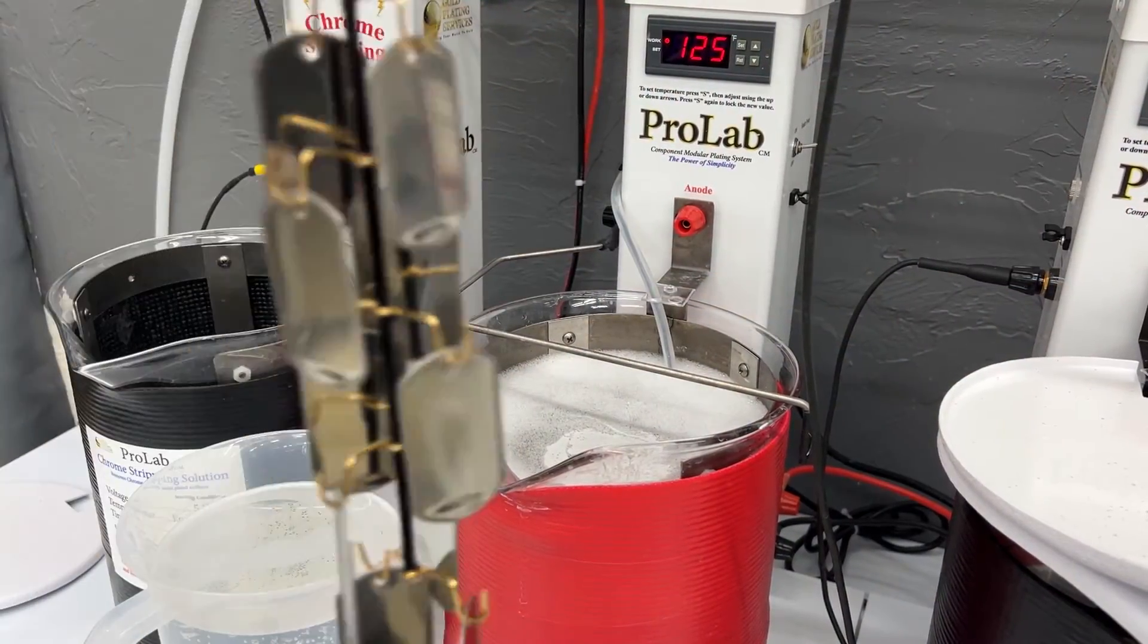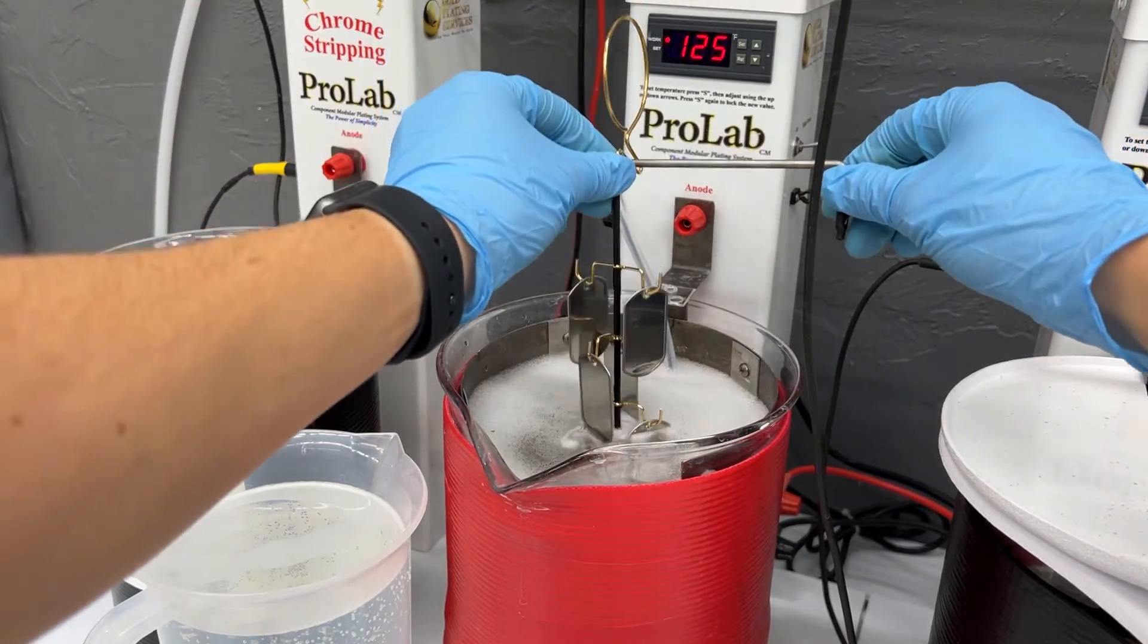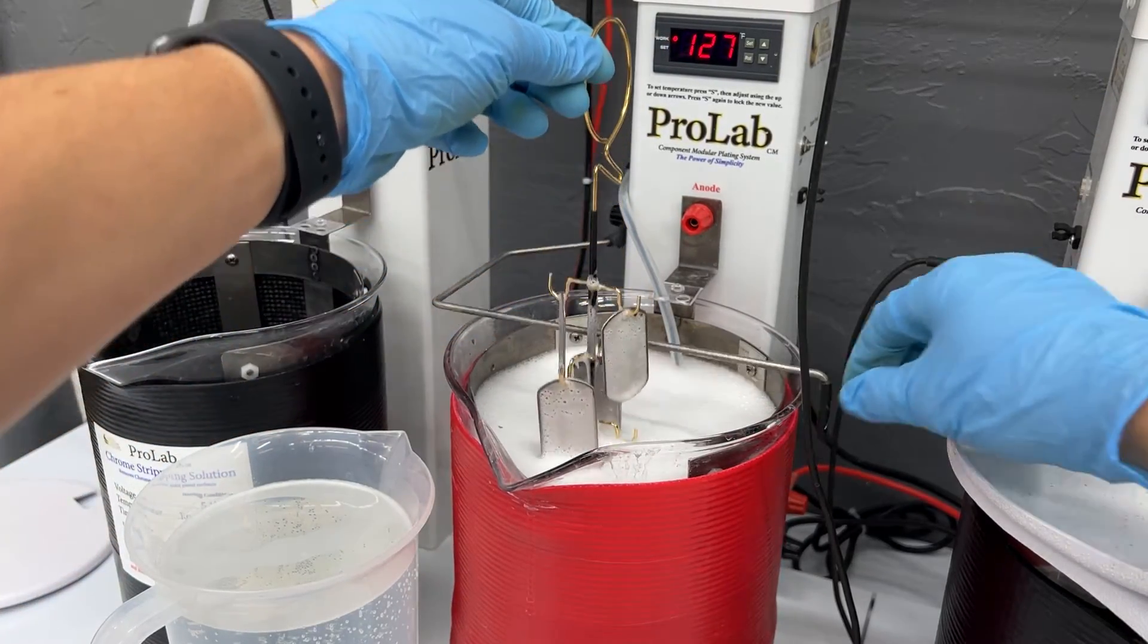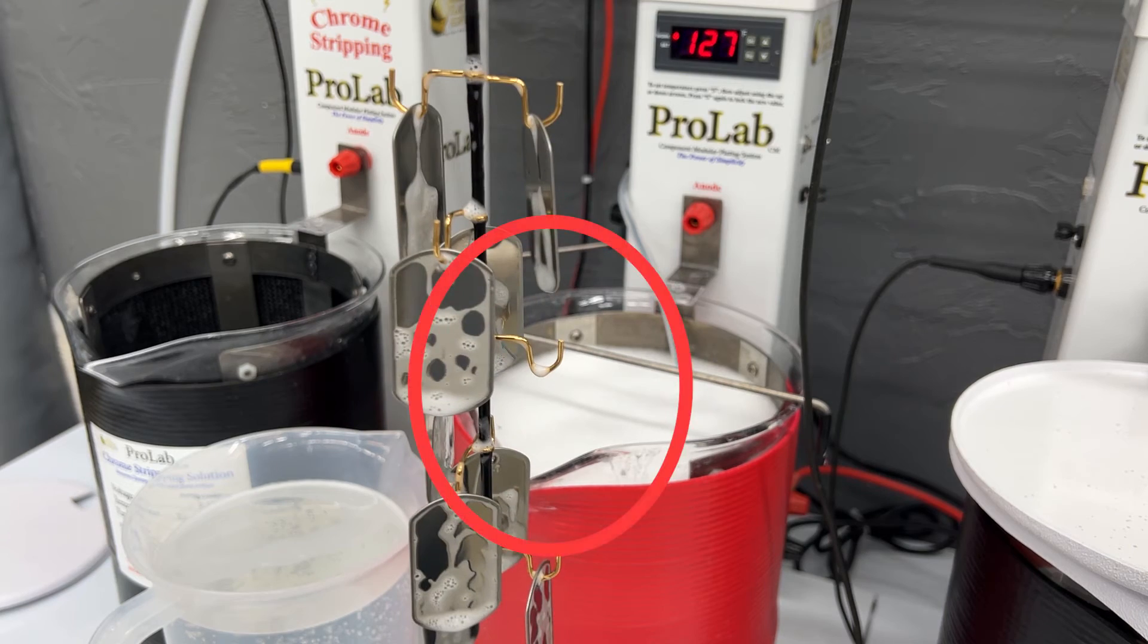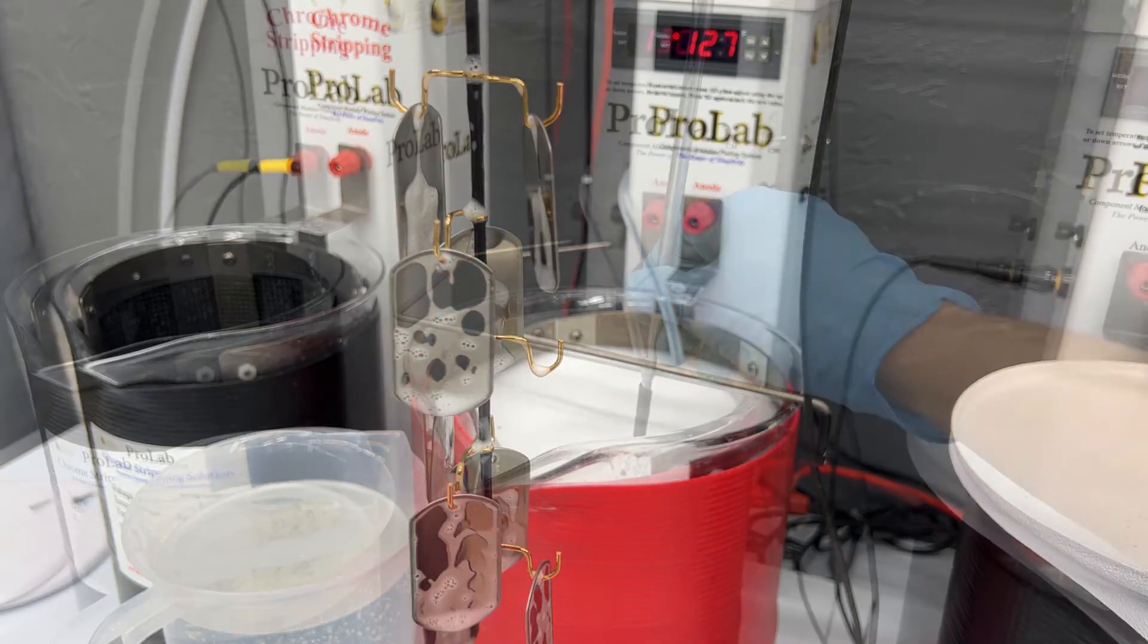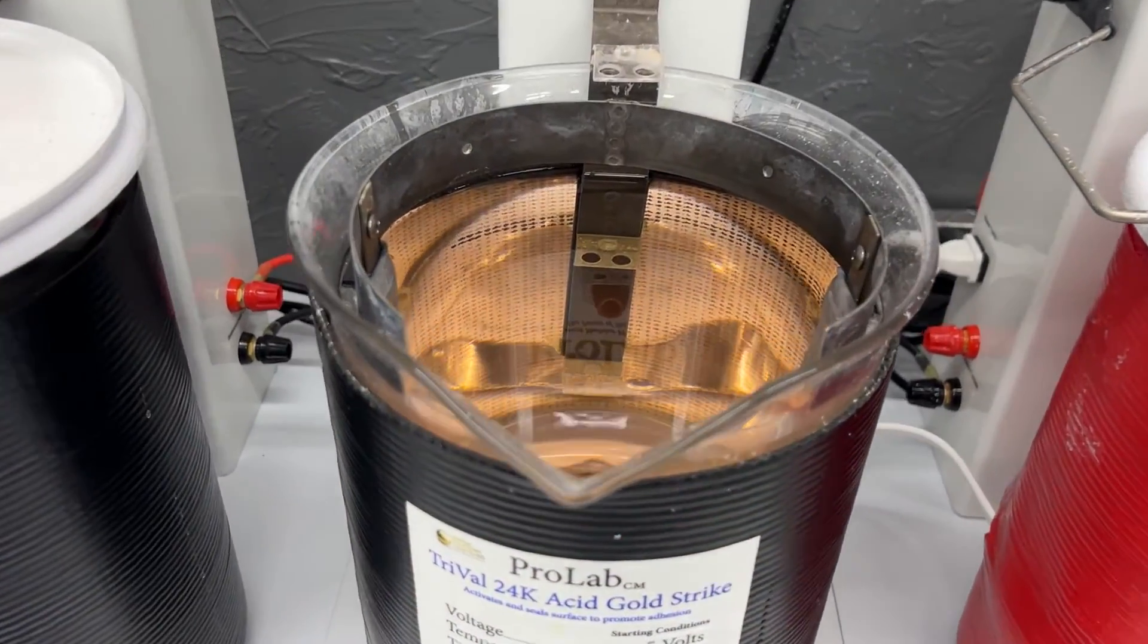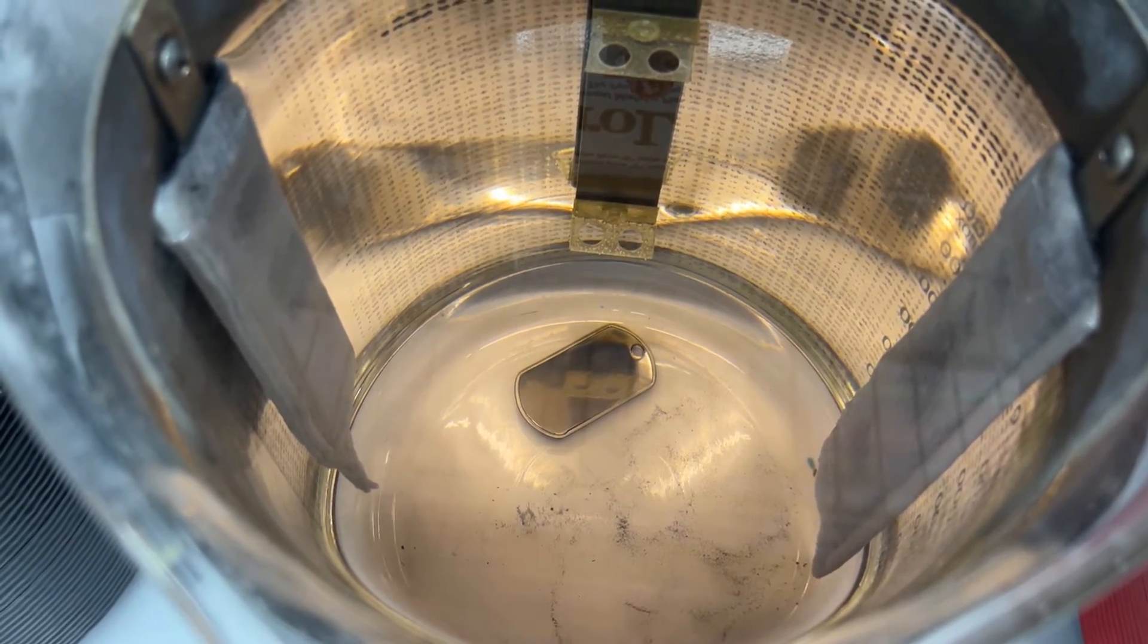It is not uncommon when bath plating several small items on a rack for an item to occasionally fall off into the tank. This is another reason why a visual inspection between steps is important. If you have noticed an item that is missing from your rack make sure it has not fallen off into one of the tanks. Items that get lost or left in the bottom of a tank usually cause contamination of the solution.